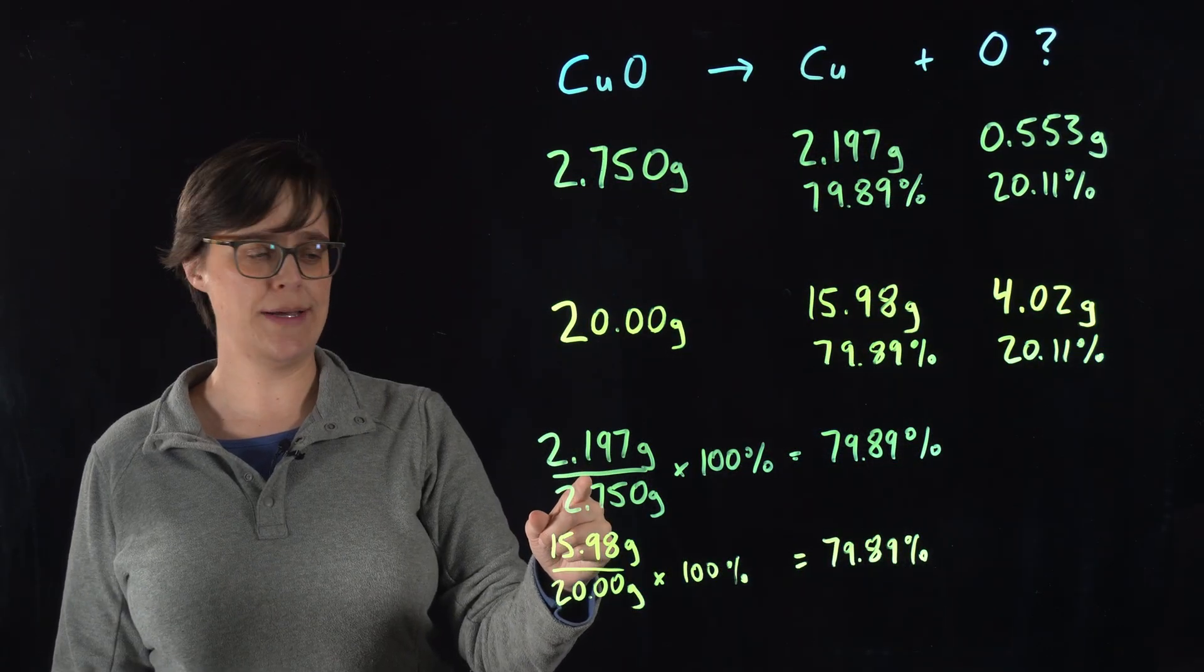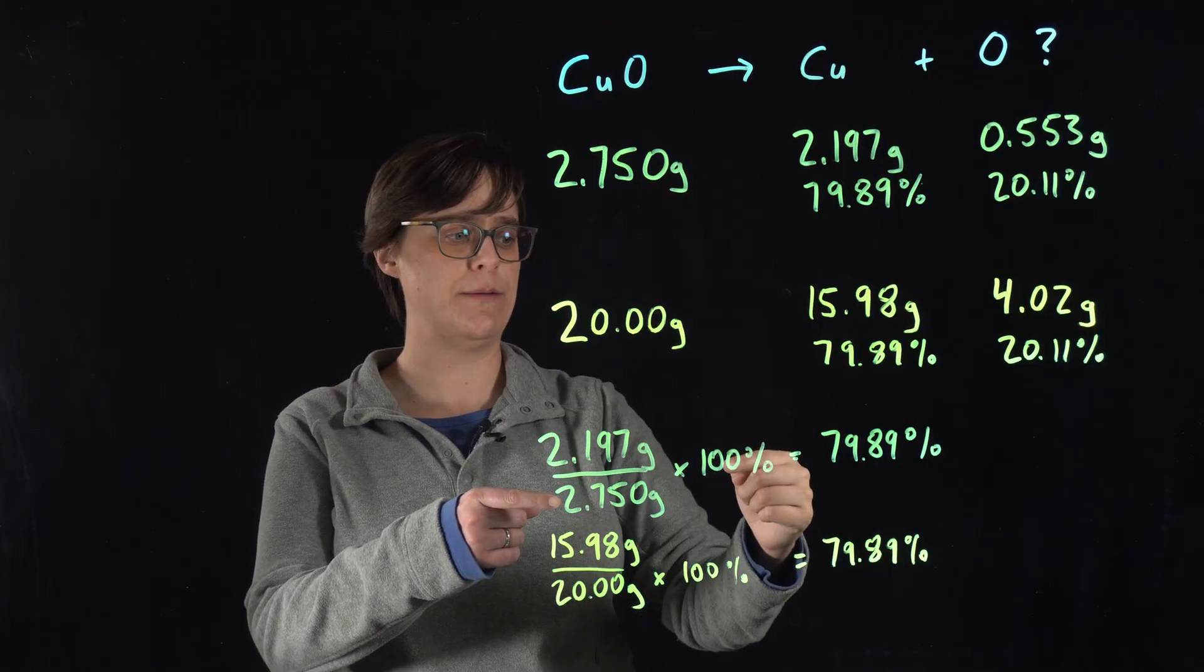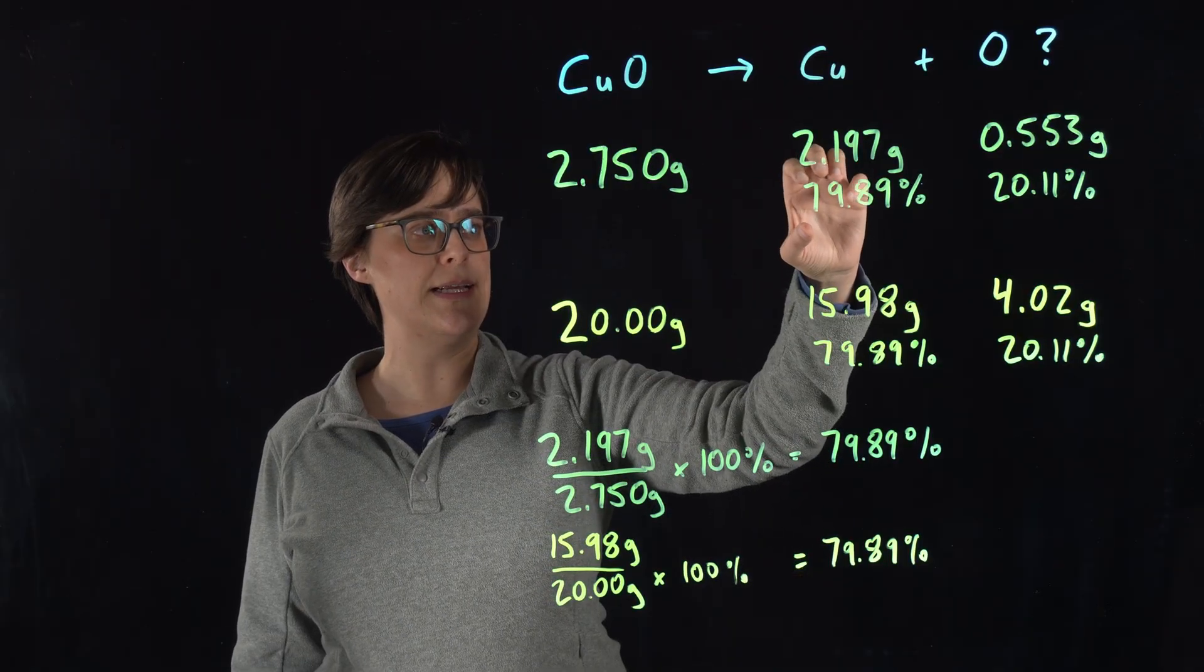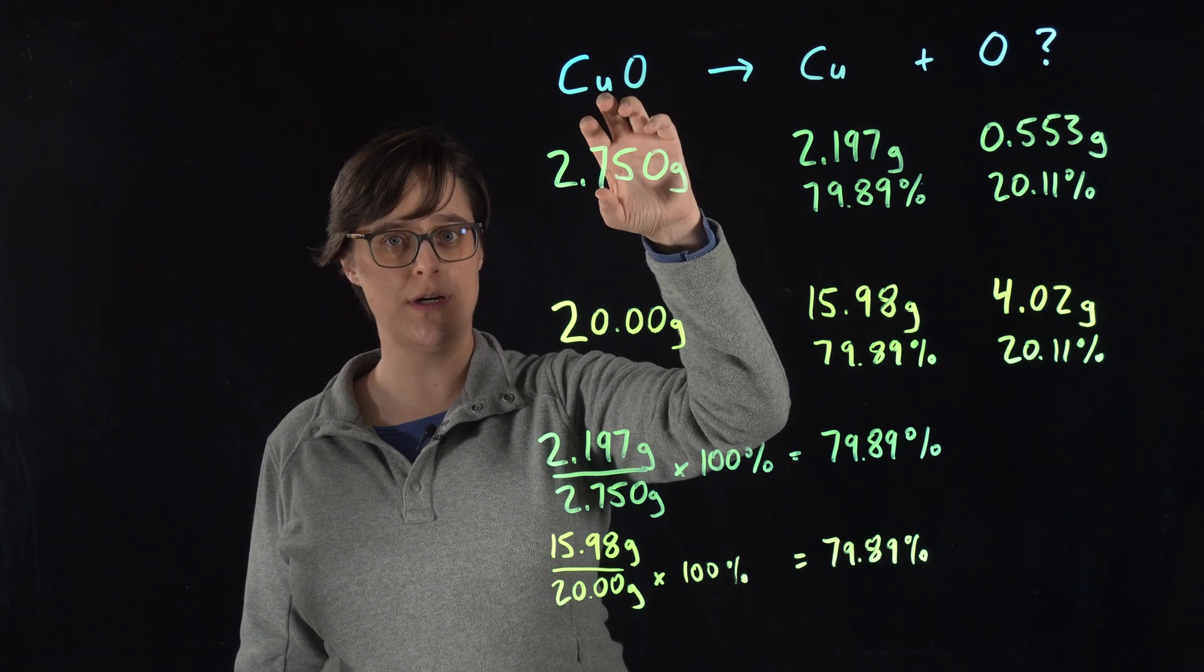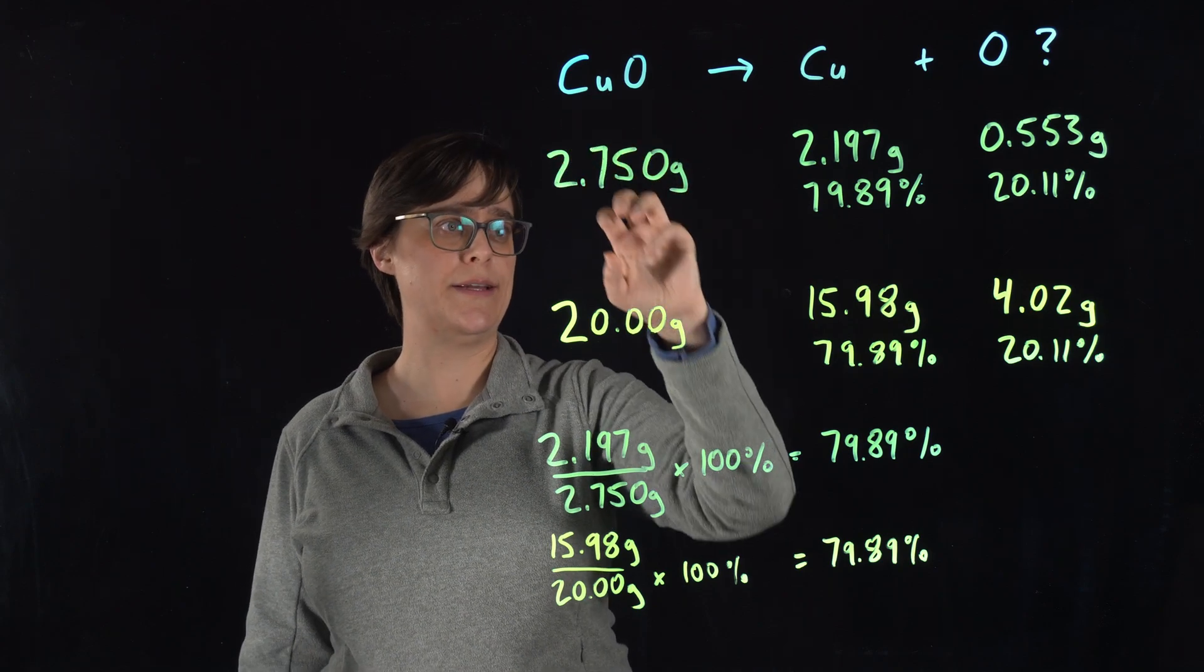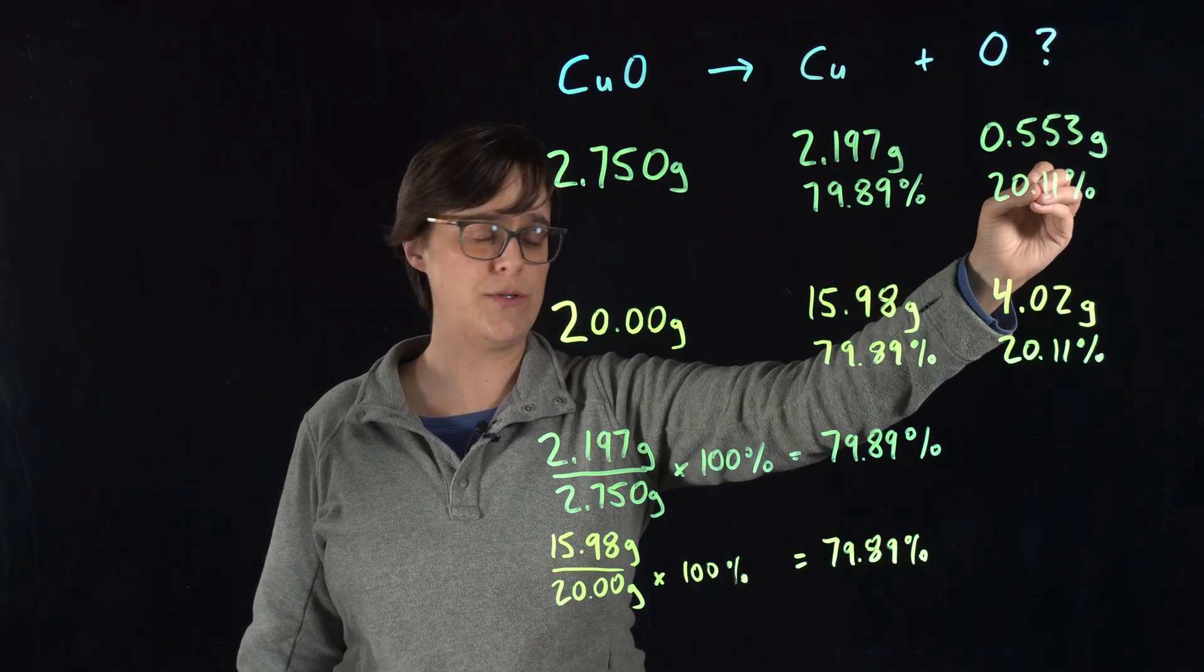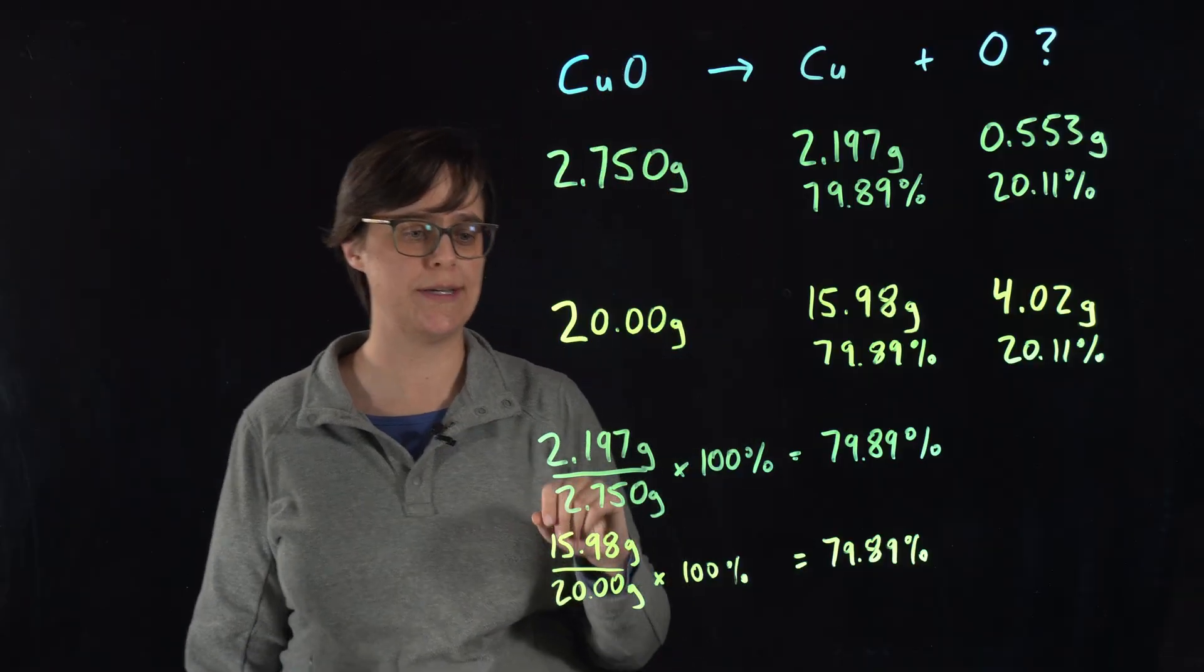2.197 grams divided by 2.750 grams times 100, we had 79.89 percent of copper in our original copper 2 oxide. And the difference between 100 percent and 79.89 is 20.11 percent was our mass of oxygen in our original copper 2 oxide.